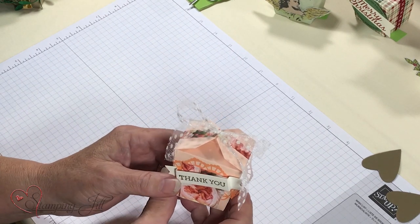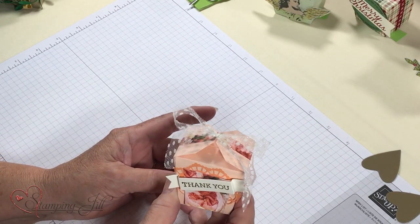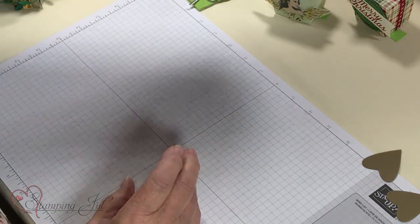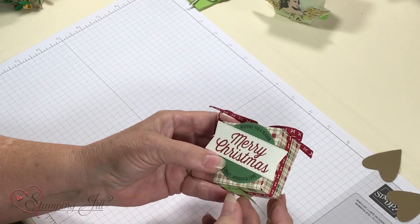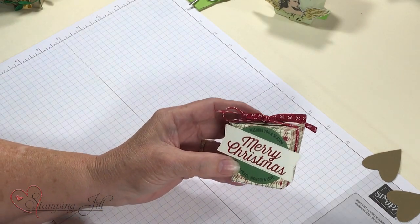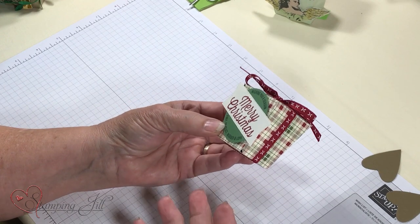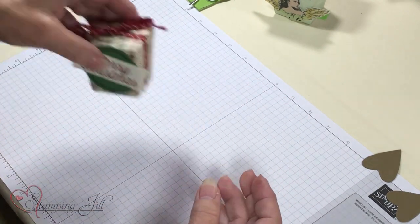I sometimes have trouble opening and closing these little boxes I have to say, so that just made it easier. There's another one just done with DSP, really simple with the festive farmhouse paper. You don't really have to do anything to them. They're so darn cute.